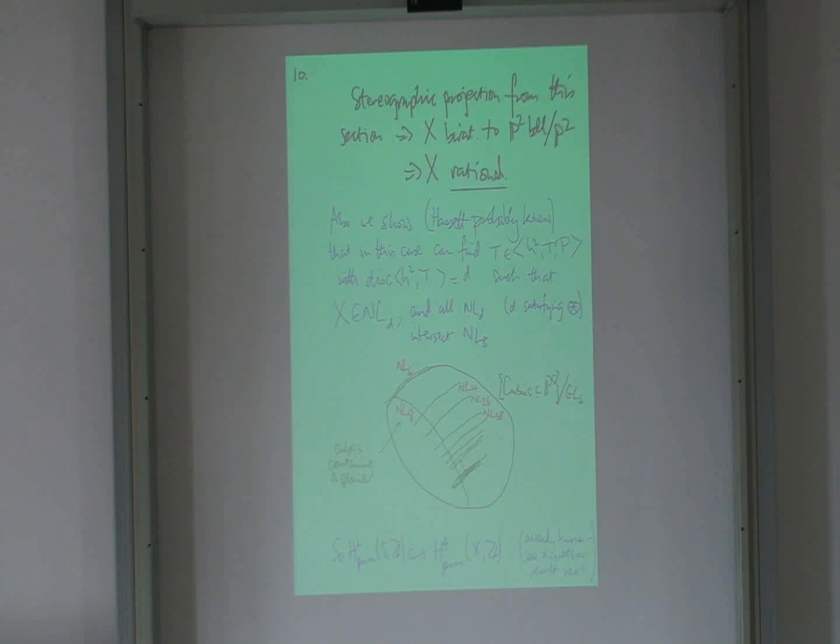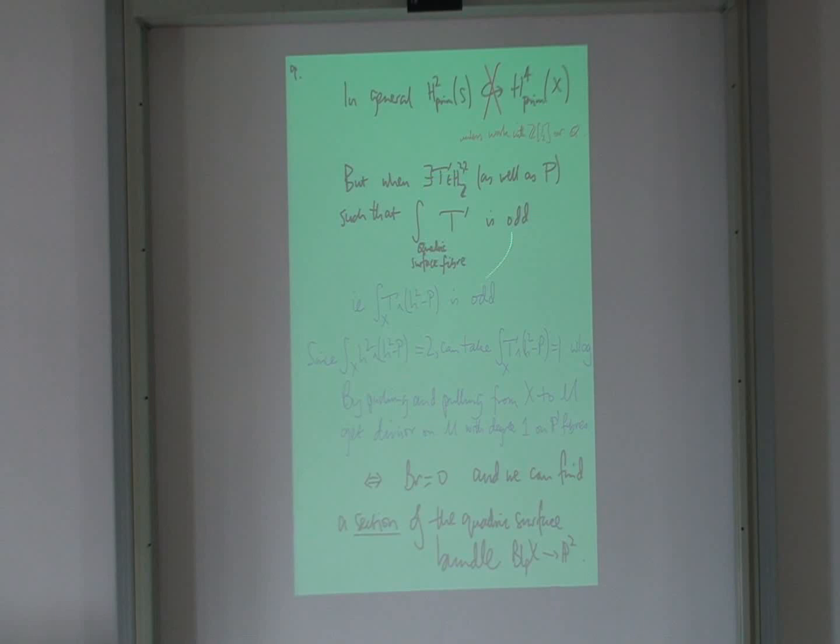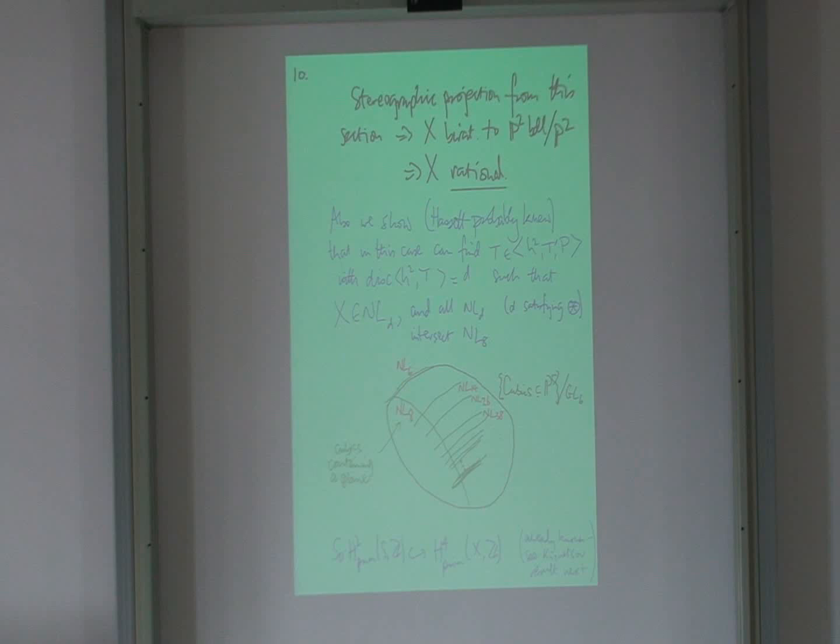So to get this quadric bundle over P2 to be rational, I need a section. And then by stereographic projection, I find a rational map. So I find that all these conditions are the same, that the Brauer class vanishes, or that I have this condition, this third class, this rank three lattice, all of these, all of them, it's rational.